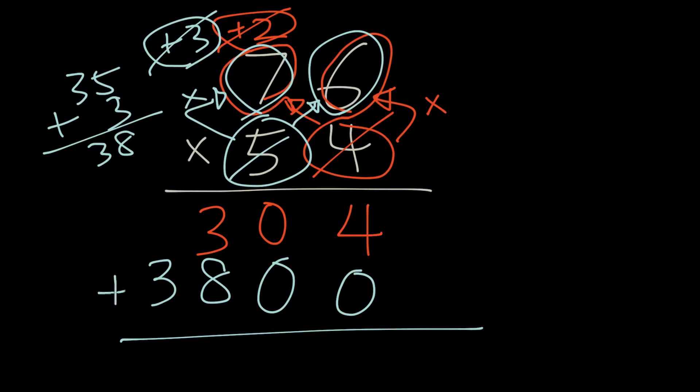Then we'll just do the addition. And 4 plus 0 is 4. 0 plus 0 is 0. 3 plus 8 is 11. 3 plus 1 is 4. So our final answer is 4,104.